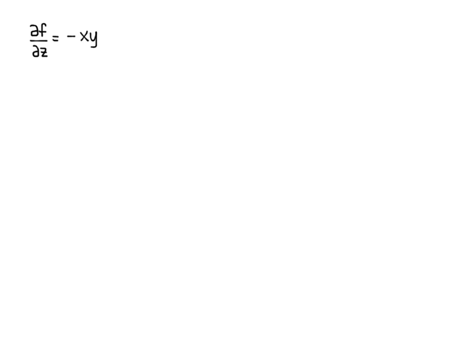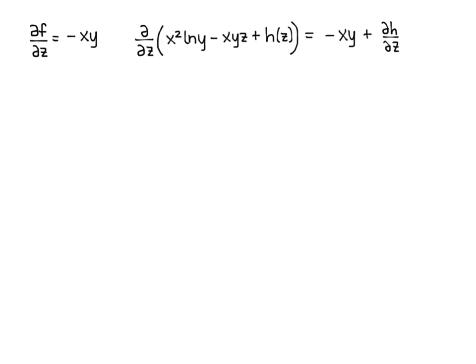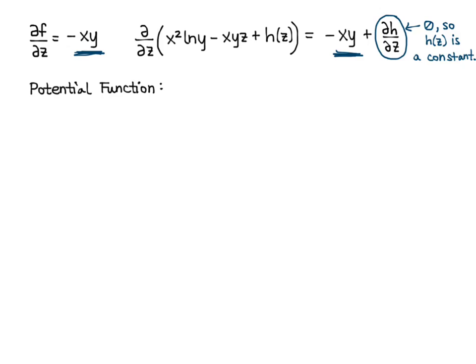We have partial f partial z equals negative xy. Taking the partial derivative with respect to z of x squared natural log of y minus xyz plus h of z gives negative xy plus partial h partial z. Since negative xy is exactly what I want, partial h partial z must equal 0, so h of z is a constant function. Our potential function is lowercase f of x, y, z equals x squared natural log of y minus xyz plus C.